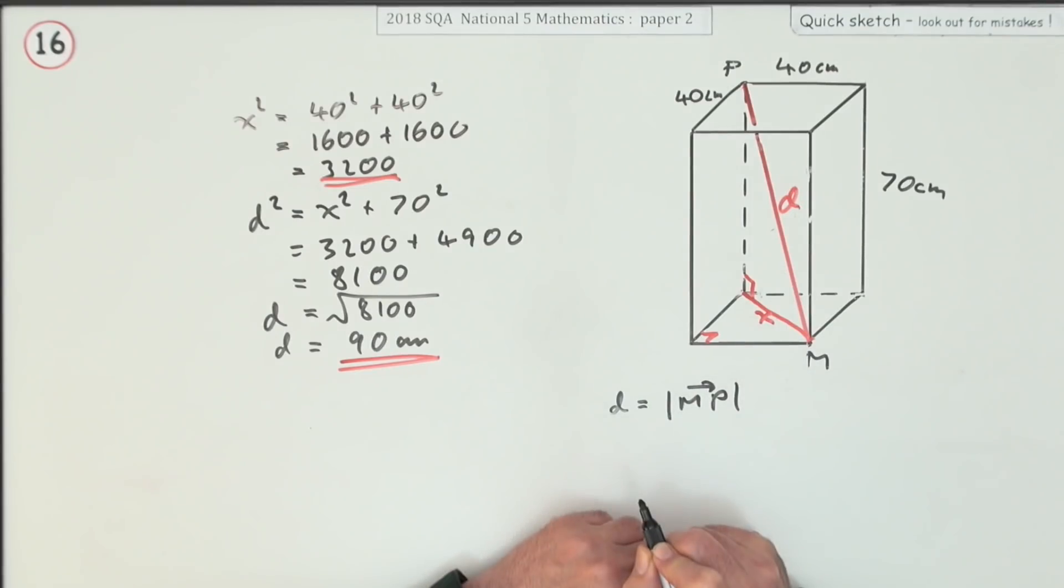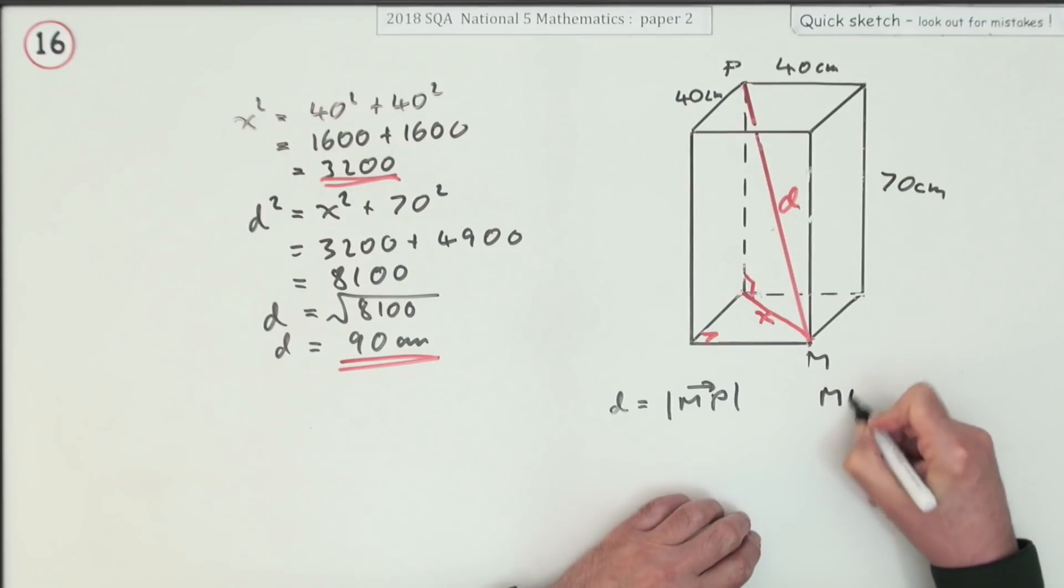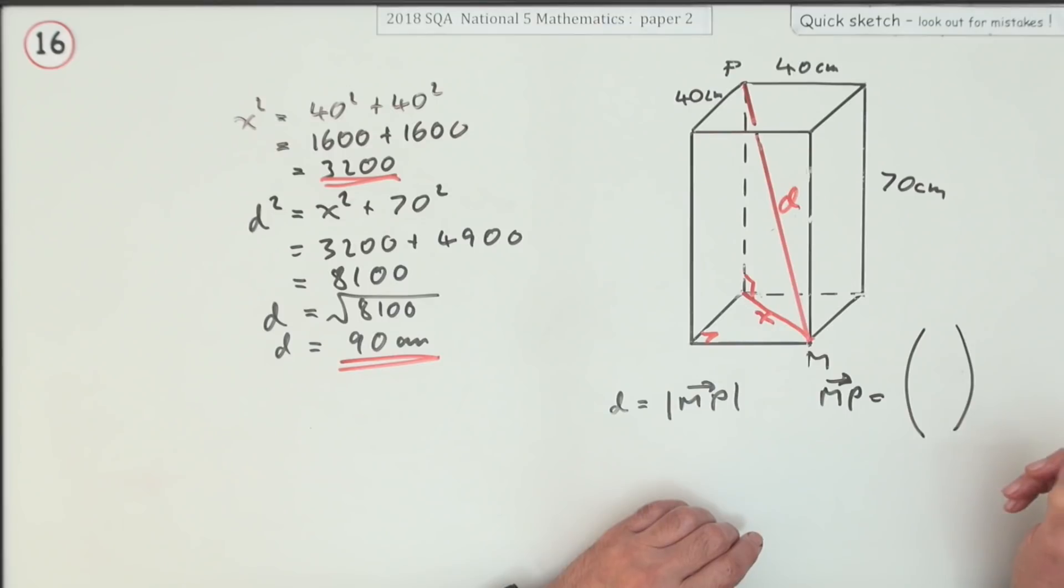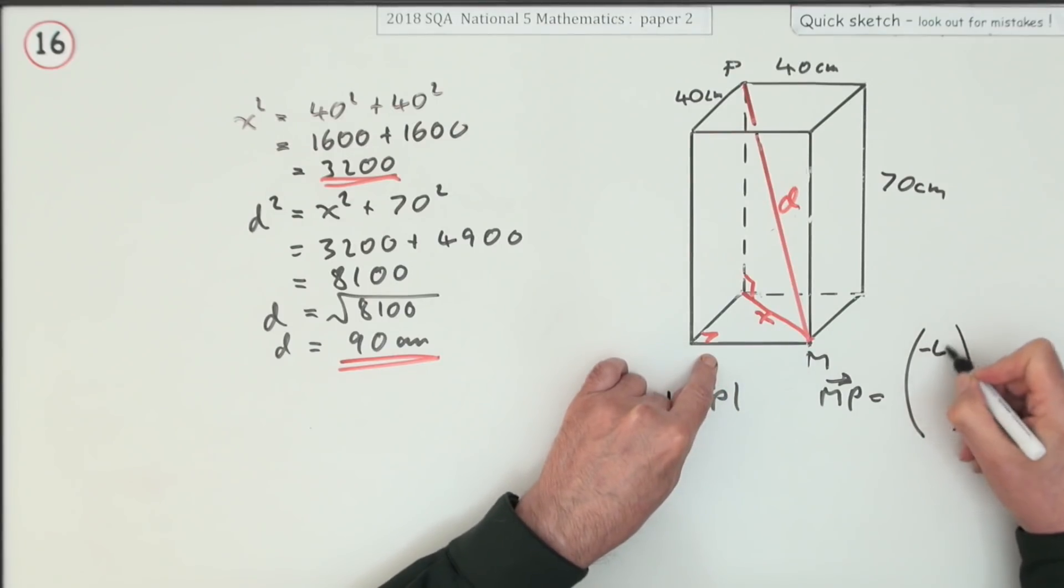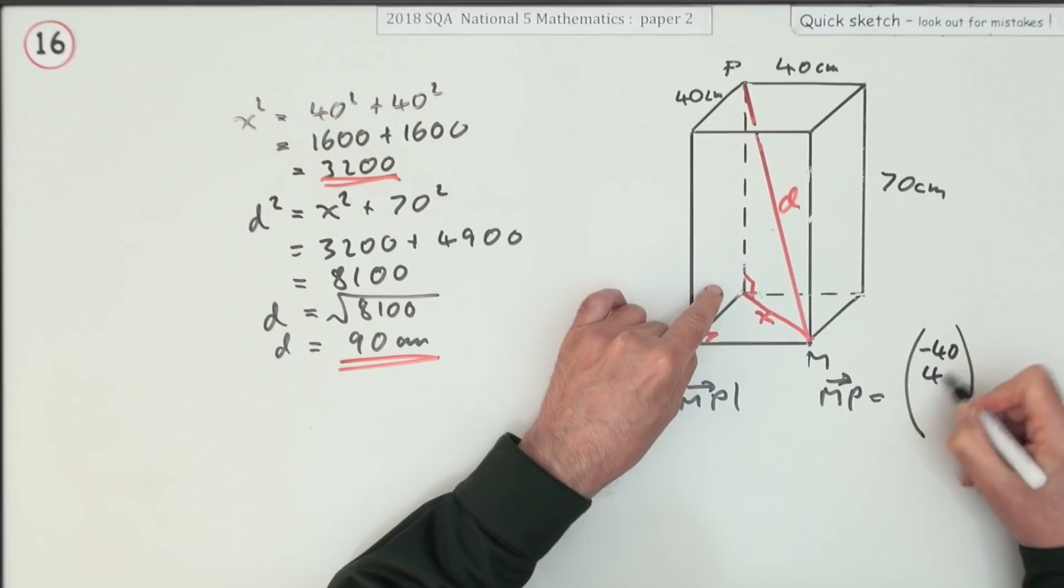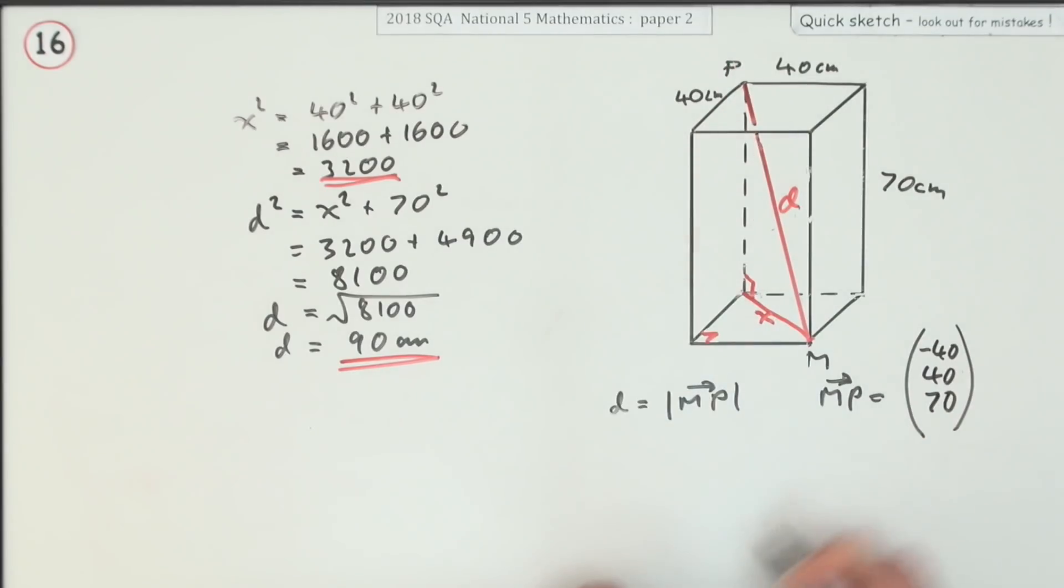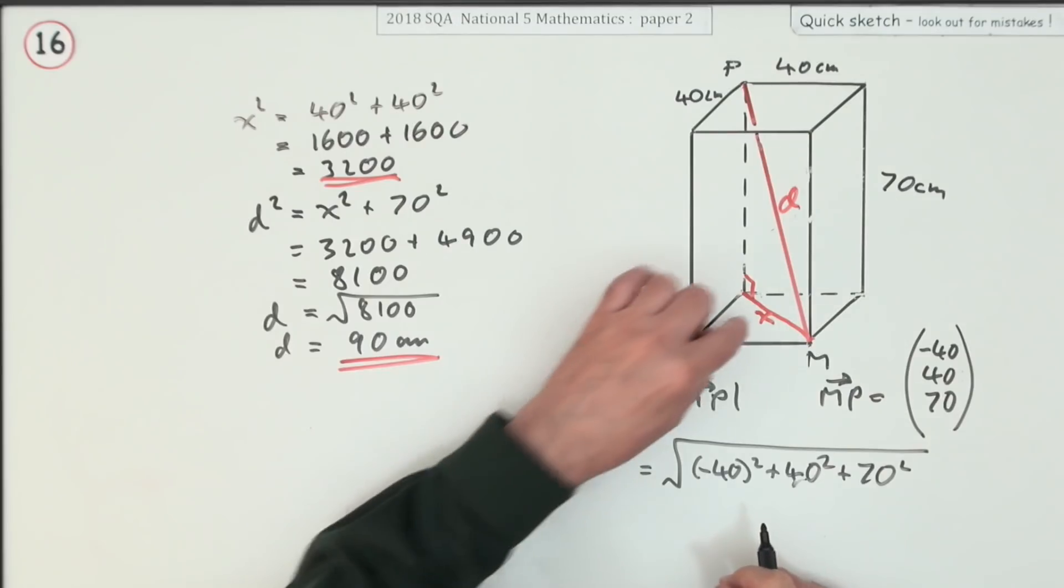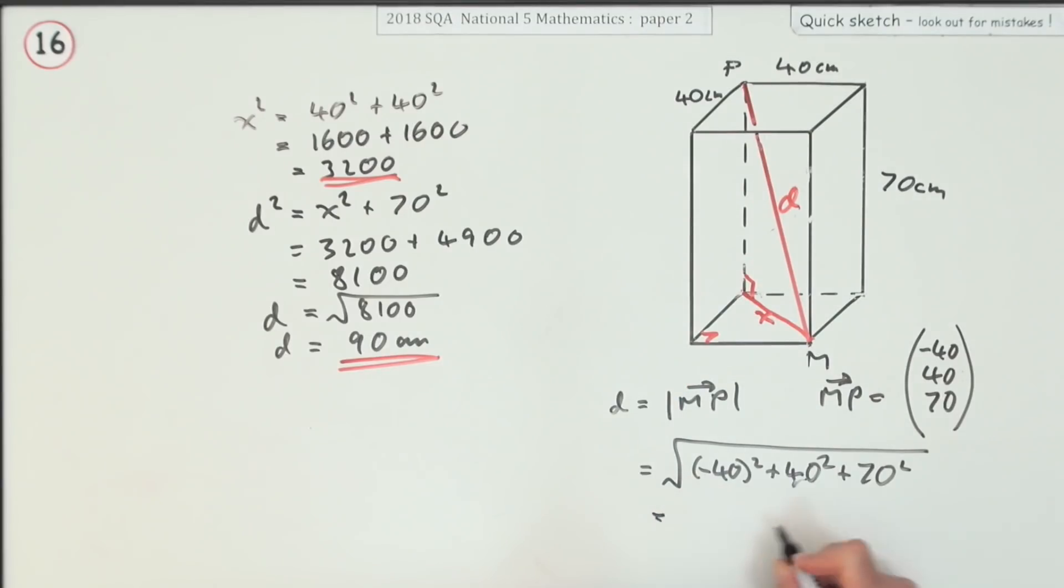And that vector from M to P—it's 40 back, 40 in, and 70 up—which means that d should equal the magnitude, which is the square root of negative 40 squared plus 40 squared plus 70 squared. That's where the magnitude came from anyway, that double right-angle triangle business. But this way, you just take that in, and it's going to come to the same thing, which is 90 centimeters.